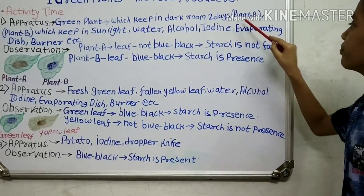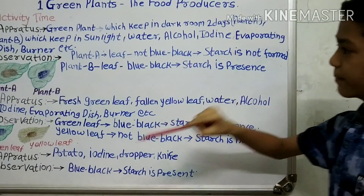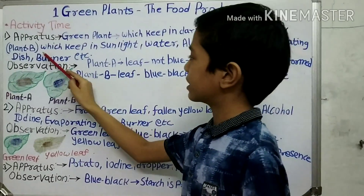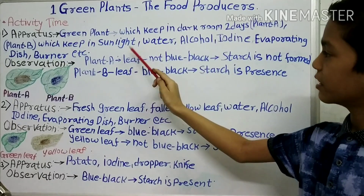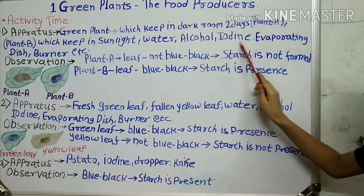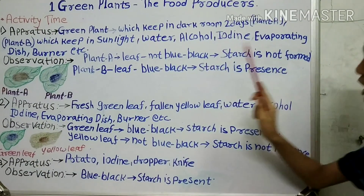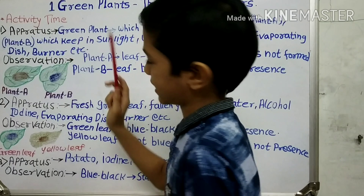We will call it Plant A, and Plant B is the one kept in the sunlight. We will also need water, alcohol, iodine, an evaporating dish, a burner, etc. I have put a well-watered potted plant into the dark room for two days.